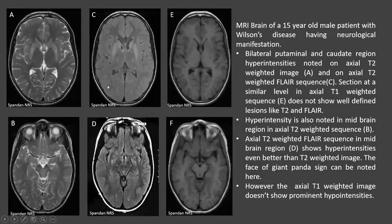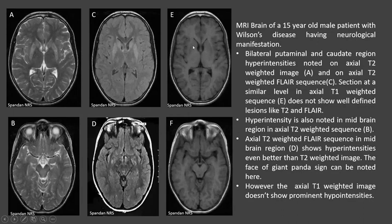The following are MRI brain sections from a 15-year-old male patient with Wilson's disease. Image A shows bilateral putamen and caudate region hyperintensities on axial T2-weighted image. The FLAIR T2-weighted image also shows bilateral putamen and caudate region hyperintensities. However, in the T1-weighted images, the lesions are not as prominent as seen in T2 and FLAIR sequences. Hyperintensity is also noted in the midbrain region on axial T2-weighted sequence.